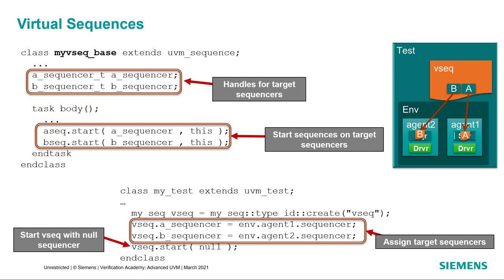In the body method of the virtual sequence, we can start the different sequences that we want on those sequencers. Notice that the virtual sequence coordinates the execution of the sequences, but to make this virtual sequence reusable, we don't hard code the sequencer paths in the virtual sequence at all. Instead, it's the test that defines on which interfaces the transactions eventually get executed. So now we have a sequence whose job it is to start two other sequences on whatever sequencers it's told to run them on, so that they can send transactions to the different interfaces of your device. This is the definition of a virtual sequence.